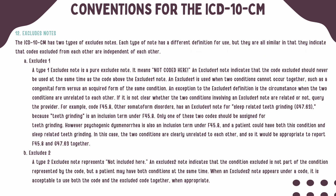Within the tabular list, you will see two types of excludes notes. Excludes 1 will indicate the conditions that cannot be coded together because they cannot simply exist at the same time. For example, you cannot have a congenital form of a condition at the same time as an acquired form of the exact same condition. Let's use absence of a limb as an example. If you are born without a foot, this is known as a congenital form. You cannot have an acquired absence of the same foot later in life if it never existed. Therefore, the code for an acquired absence of the foot will have an Excludes 1 note with the congenital absence of the foot listed underneath.